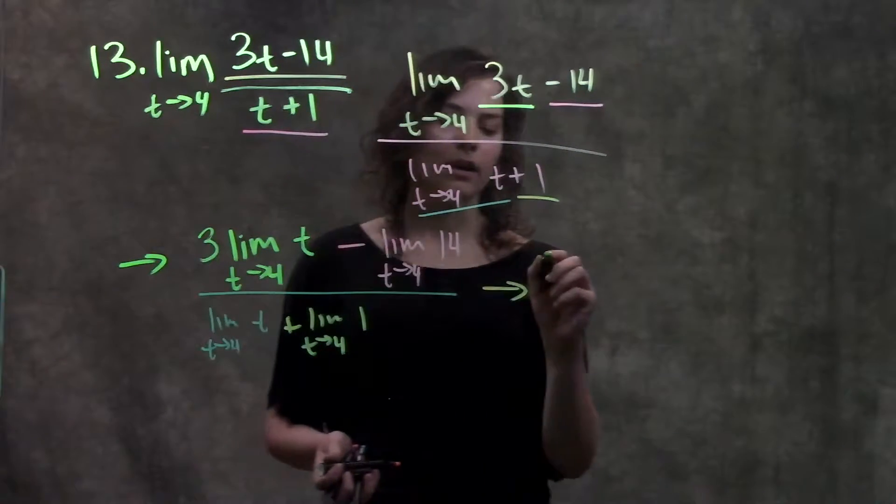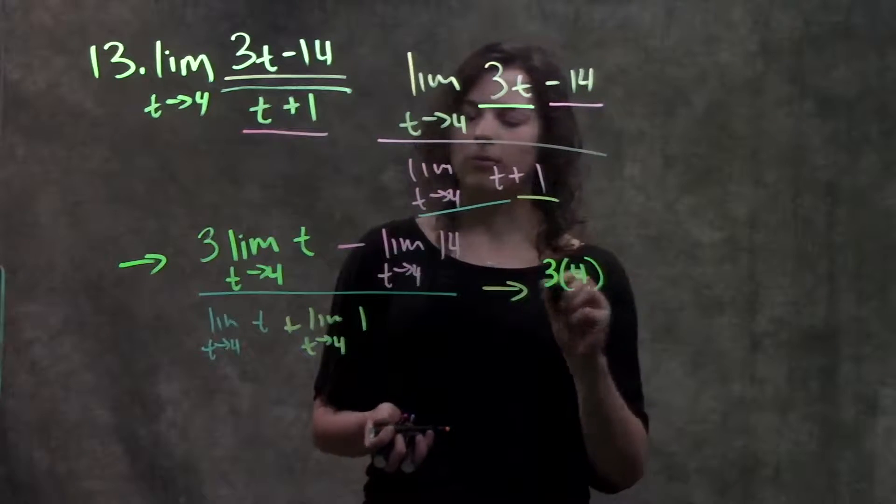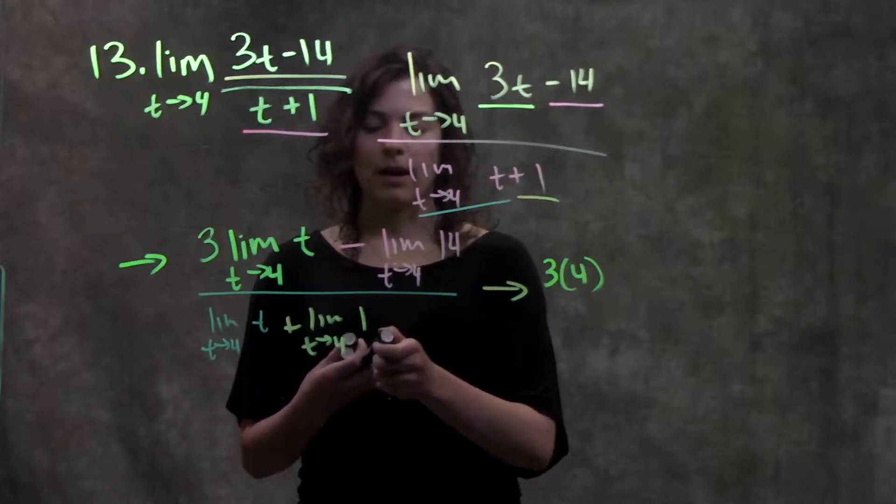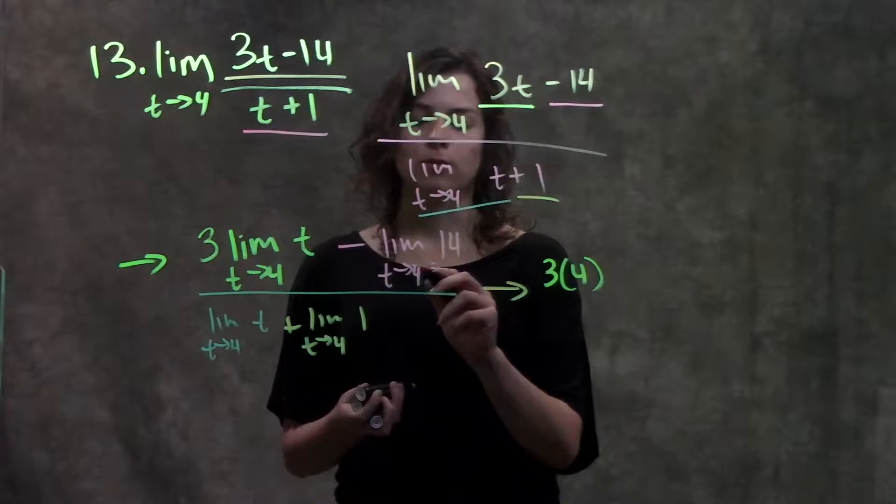But remember, there's a 3 out here. So I have 3 times 4. Now I have minus the limit as t approaches 4 of 14.